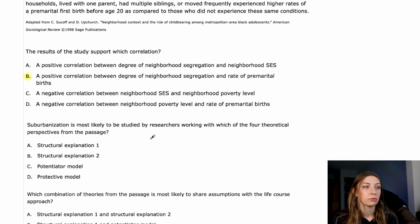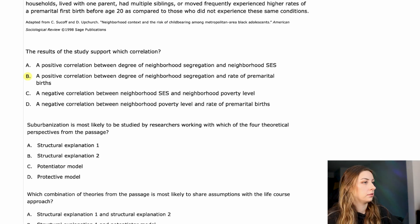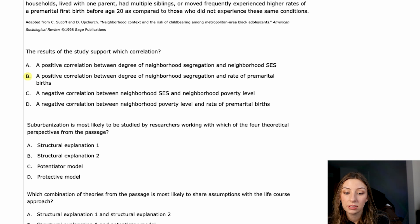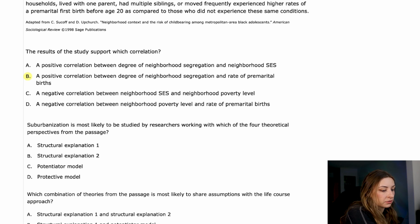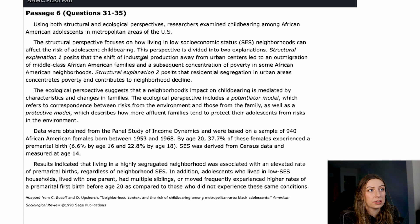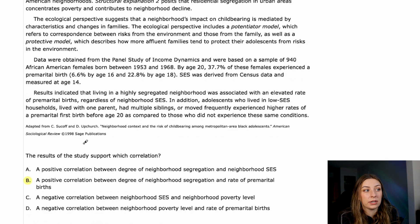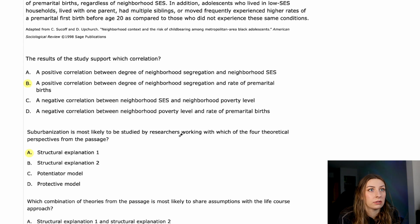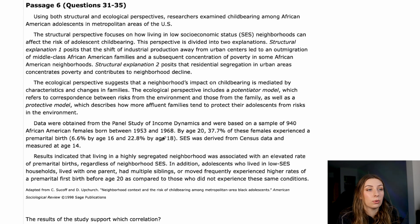The next question asks which of the four theoretical perspectives from the passage would most likely be studied by researchers working with suburbanization. The AAMC says suburbanization is the out-migration from cities to suburbs, which often involves middle-class residents leaving behind low-income residents. That sounds exactly like structural explanation one, which posits that the shift of industrial production away from urban centers led to an out-migration of middle-class African-American families. If you got this wrong, you probably didn't know what suburbanization is — put that on an Anki card.